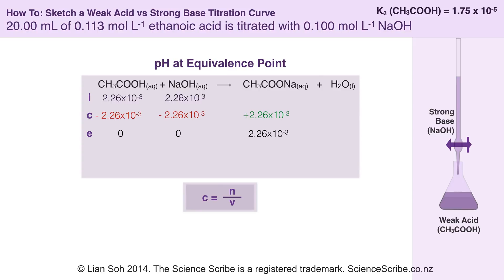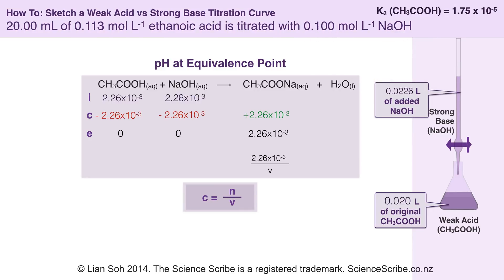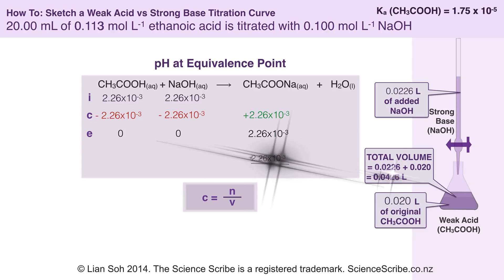I can use concentration = N ÷ V. I know how many moles of sodium methanoate I've got, but I don't know the volume. I know I started with 0.02 litres of my initial ethanoic acid, and I also added some volume of sodium hydroxide, so I need to work that out. Rearranging C = N ÷ V, using the known moles and concentration of sodium hydroxide from the question, I can solve for the volume of sodium hydroxide needed. In total, adding those together, I needed 0.0426 litres, and updating my ICE table tells me the concentration of the ethanoate ions formed is 0.0531 moles per litre.